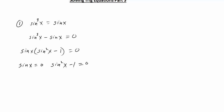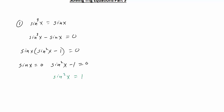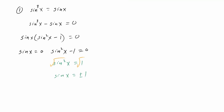Sine of x equals zero is already simplified. Then we look at sine squared x minus one: we move the one over so it's a positive one, and take the square root of both sides. We end up with sine x equals plus or minus one. So we need to go to the unit circle and identify where sine of x equals zero and where sine of x equals plus or minus one.